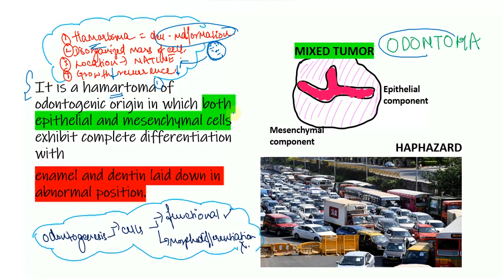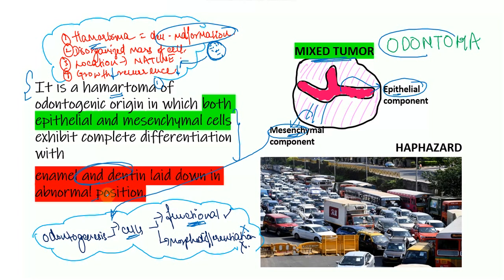The second part of the definition indicates that this is a mixed tumor, so it arises from two components: the epithelial and the mesenchymal. It derives from the cells of both components in such a way that it happens at a stage of odontogenesis where the cells are functional but have not finished morphodifferentiation. Although they are functional — there are functional ameloblasts and functional odontoblasts — they do lay down enamel and dentin but in an abnormal manner.